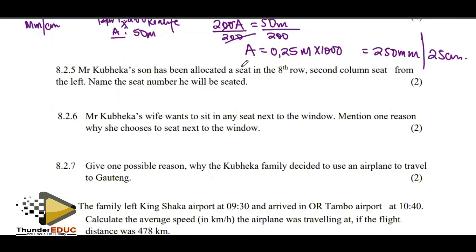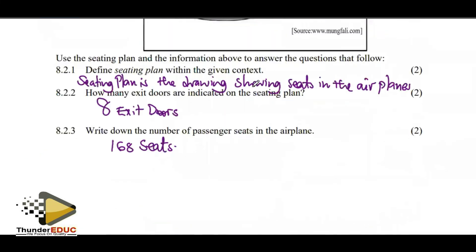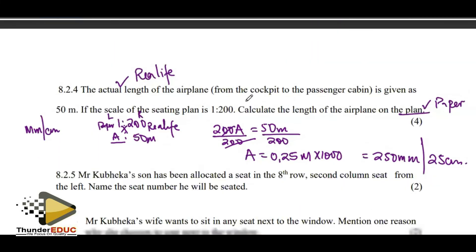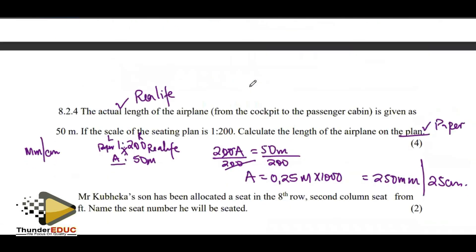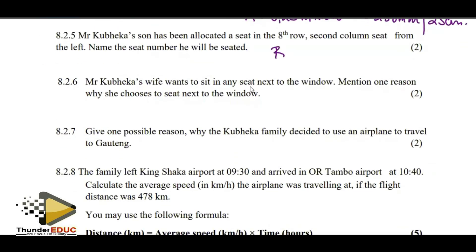Mr. Kubeka has been allocated a seat in the 8th row, 2nd column from the left. Name the seat number. Going across, these are columns; going down, these are rows. Row eight, second column from the left — that seat is B8. So the seat number is B8.